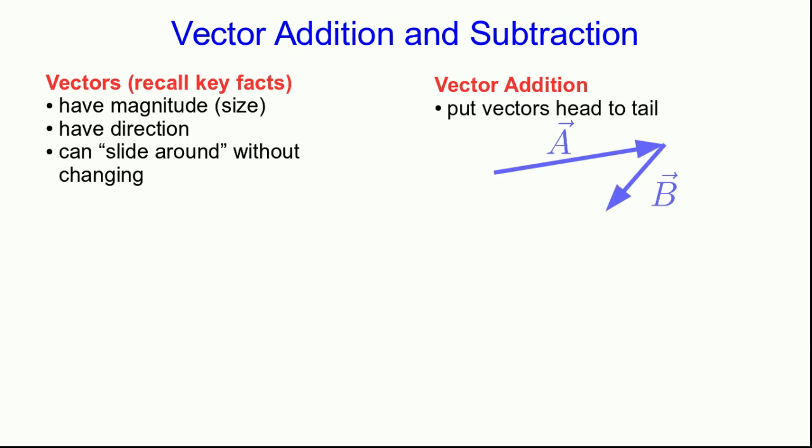Well, what we mean by addition of vectors is that we take one and put its tail on the head of the other. And then the sum is the result of starting at the tail of one and following them both to the end of the second one.